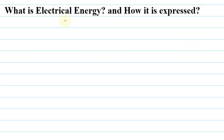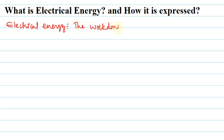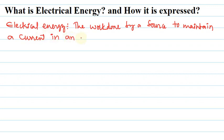Hello everyone. In this video let us see what is electrical energy and how it is expressed. First, let us define electrical energy. Electrical energy is the work done by a source to maintain a current in an electric circuit.